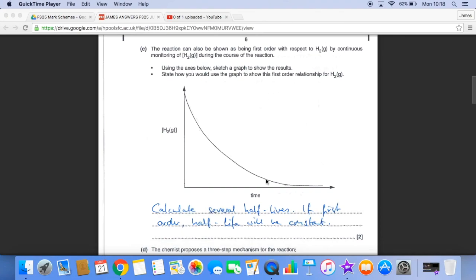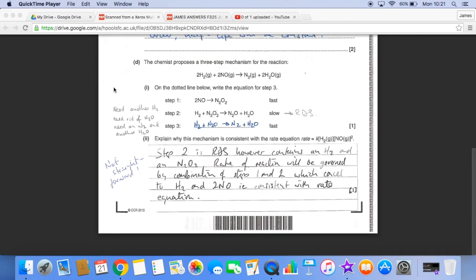And then the last part of the question, part D, about the mechanism. So on the dotted line we had to come up with the equation for step three. So here's the logic: we need another hydrogen because we've only got one here, so that needs to go there. We need to get rid of the N2O.